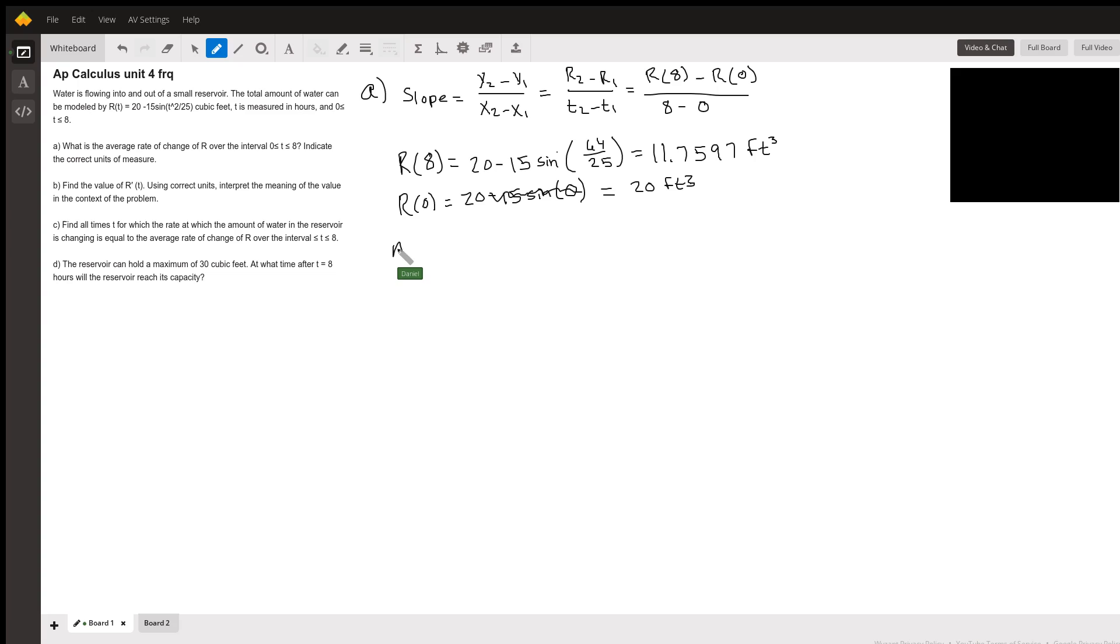So the average rate of change for part A, we're going to do R of 8, so 11.7597 cubic feet minus 20 cubic feet, divided by 8 minus 0, which is just 8, and that's in hours. And I already did this in my calculator, and this comes out to be negative 1 cubic feet per hour.